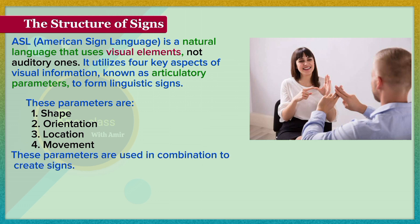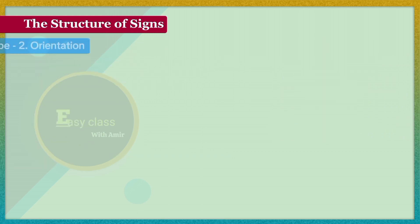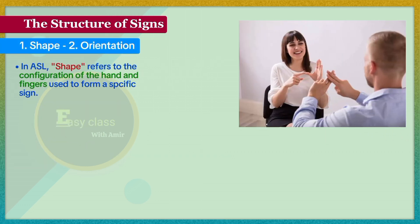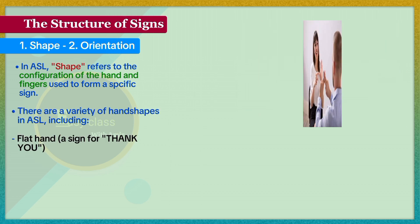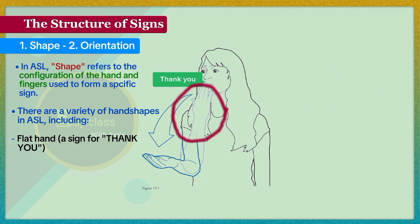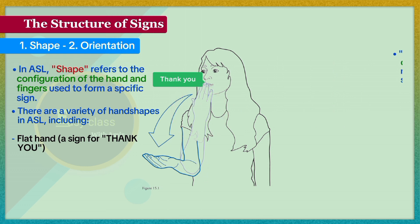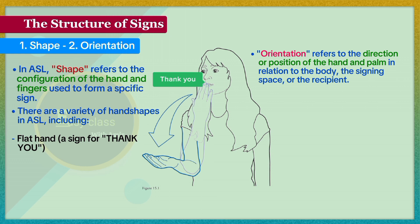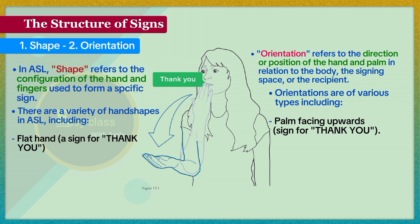These parameters are used in combination to create signs. Shape refers to the configuration of the hand and fingers used to form a specific sign. Different handshapes are used to convey different meanings and distinguish between various signs in ASL, including the flat hand as in the sign for 'thank you.' Orientation refers to the direction or position of the hand and palm in relation to the body, the signing space, or the recipient — for example, palm facing upwards in the sign for 'thank you.'